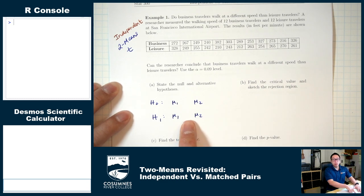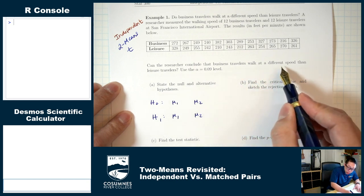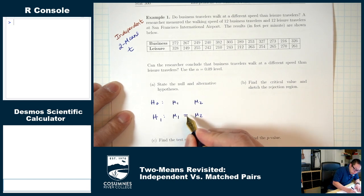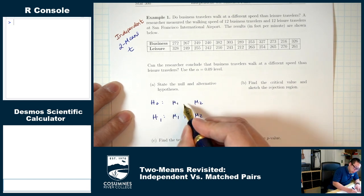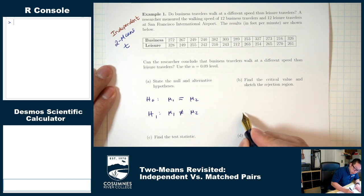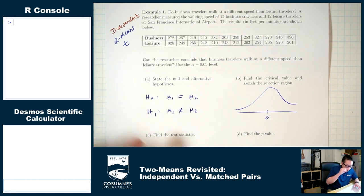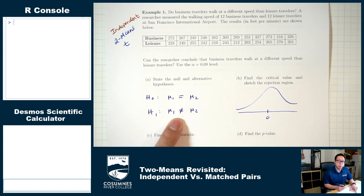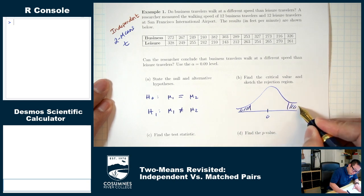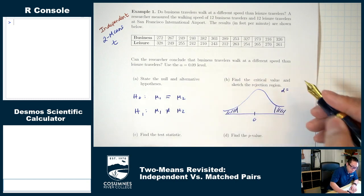What symbol goes in the middle? We want to conclude that business travelers walk at a different speed — 'differs' means not equals. So H1: mu1 ≠ mu2, and H0 always has an equal sign, so H0: mu1 = mu2.